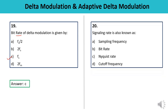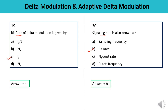Question 20: Signaling rate is also known as? As discussed in Question 19, bit rate and signaling rate are the same thing. So that is the correct answer.